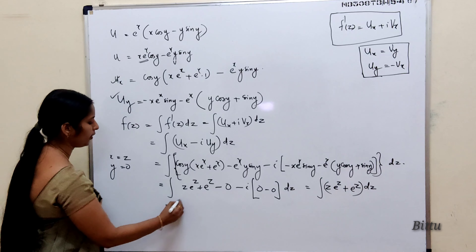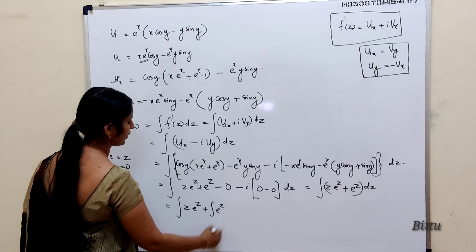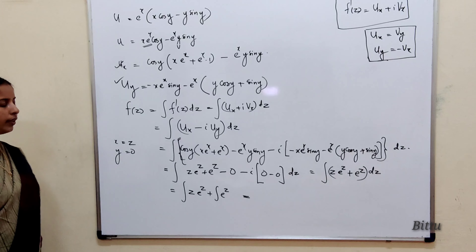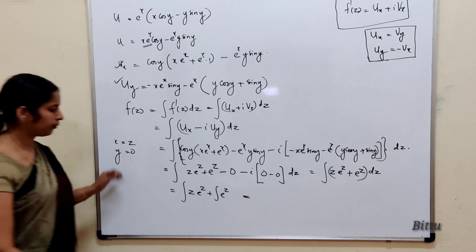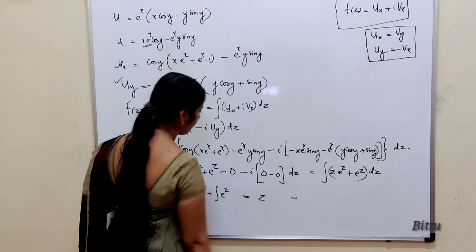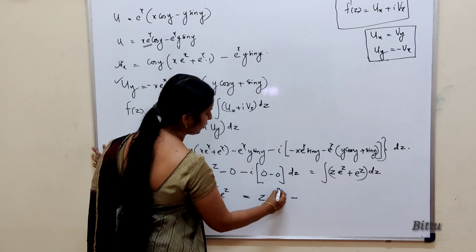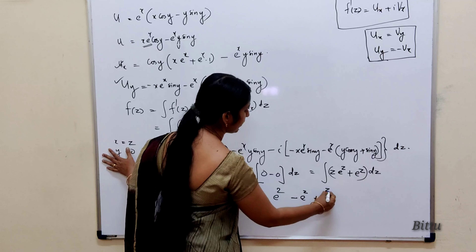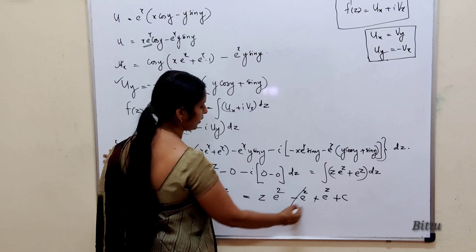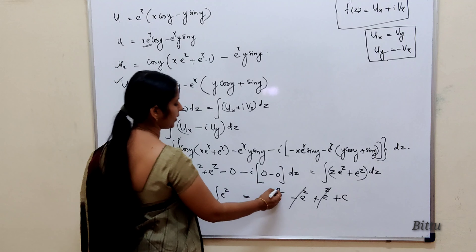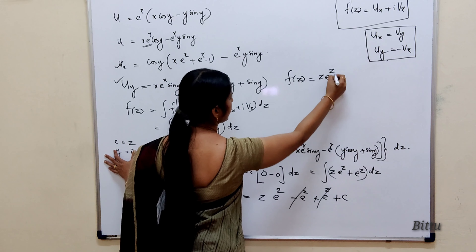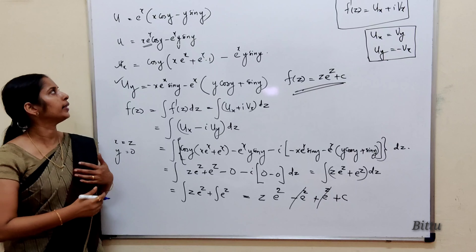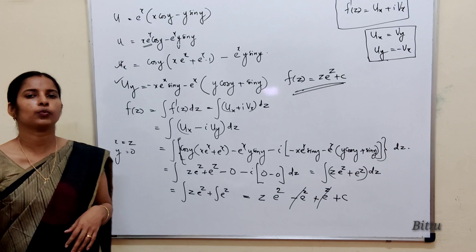That is integral of z·e^z dz + integral of e^z dz. Apply integration by parts (or the shortcut tabular method) for z·e^z. The integral of z·e^z = z·e^z − e^z. Plus integral of e^z = e^z. After integration, add + c. So f(z) = z·e^z + c. This is the required analytic function whose real part is e^x(x·cos(y) − y·sin(y)).